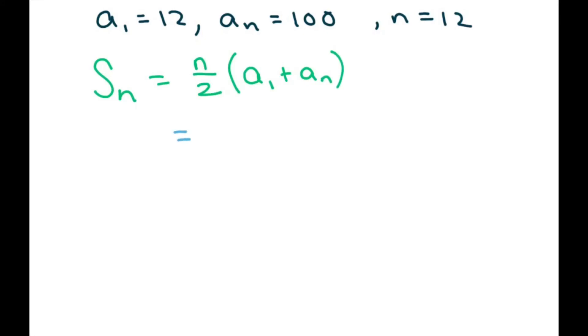So, they give us the first term pretty easy. You could just plug it in. Our n is 12. First term is 12. Both 12s. And our last term is 100. So, basically, we get 6 times 112. And 6 times 112 equals 672.